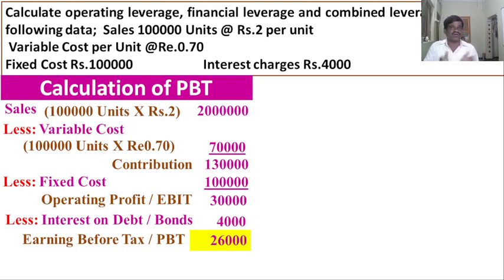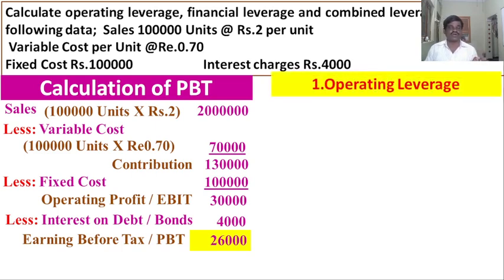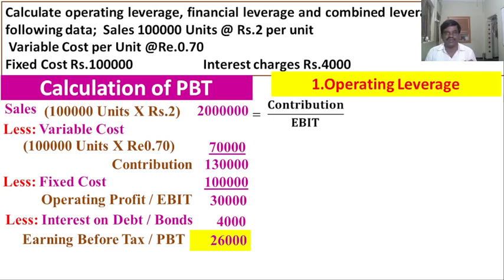Now we calculate the three types of leverage. The first is operating leverage, the second is financial leverage, and the third is combined leverage. The formula to calculate operating leverage is: operating leverage equals contribution divided by EBIT.